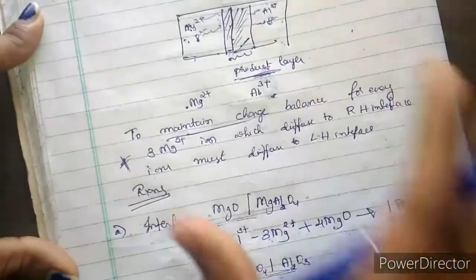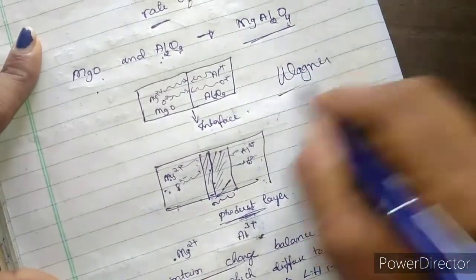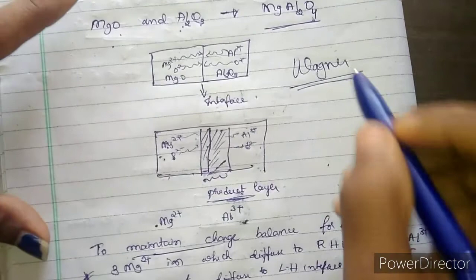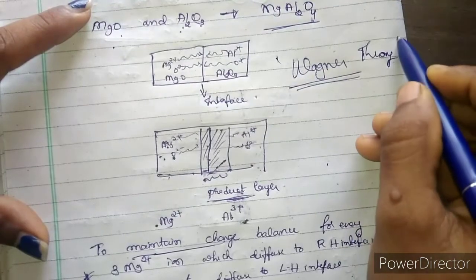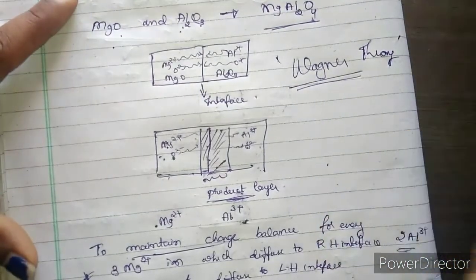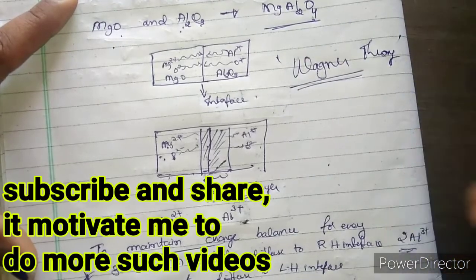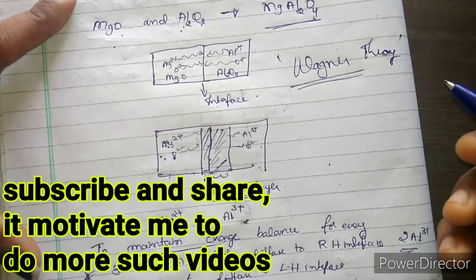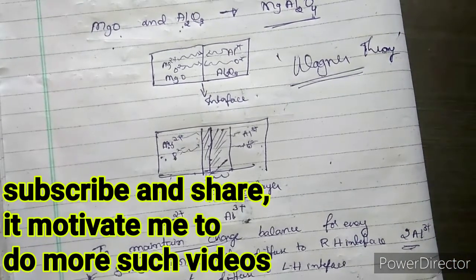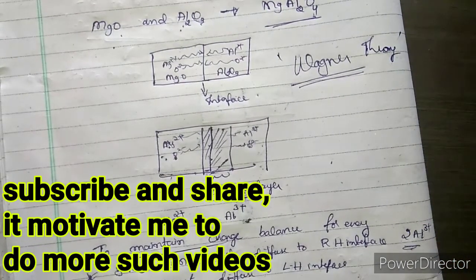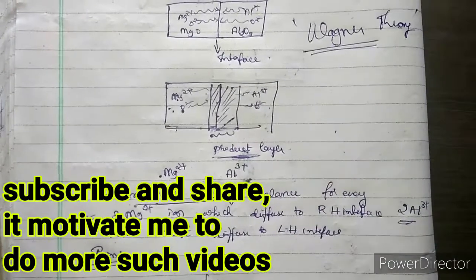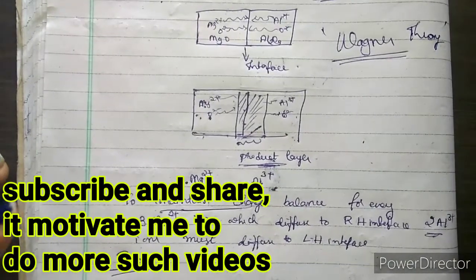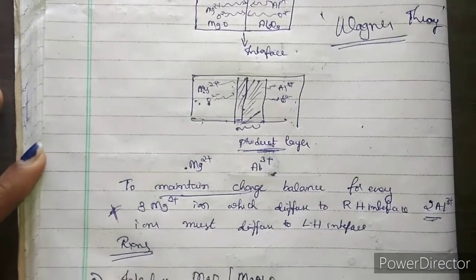This particular reaction was studied by Wagner, and that is why this theory or solid state reaction is called Wagner's theory or Wagner's mechanism. It can also simply be called a solid state reaction because the reaction happens between two solids. If you have any doubts, please let me know in the comment section. If you liked this video, please like, share it with your friends, and subscribe to my channel. Thank you for watching.